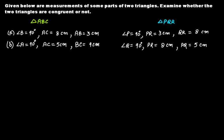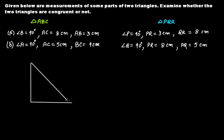Let's quickly draw a rough diagram for both triangles. Before drawing, notice that angle B is 90 degrees, angle P is 90 degrees, angle A is 90 degrees, and angle Q is 90 degrees — meaning we are dealing with two right-angled triangles. Let's draw rough right-angle triangles: this one for ABC and this one for PQR.